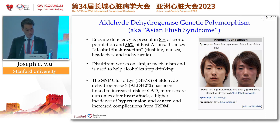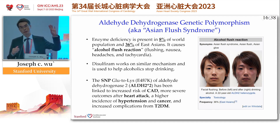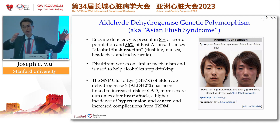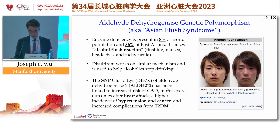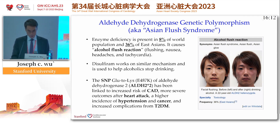We treat alcoholics by giving them disulfiram, and disulfiram works on the same mechanism by blocking the enzyme. So when you drink alcohol, alcohol becomes acetaldehyde. Acetaldehyde is toxic. Acetaldehyde gets broken down to acetic acid, which is non-toxic, by acetaldehyde dehydrogenase. So if you're missing this enzyme, you have a much higher buildup of toxic acetaldehyde. This enzyme deficiency has been linked to increased coronary artery disease, more severe outcome after a heart attack, hypertension, type 2 diabetes, and so forth.